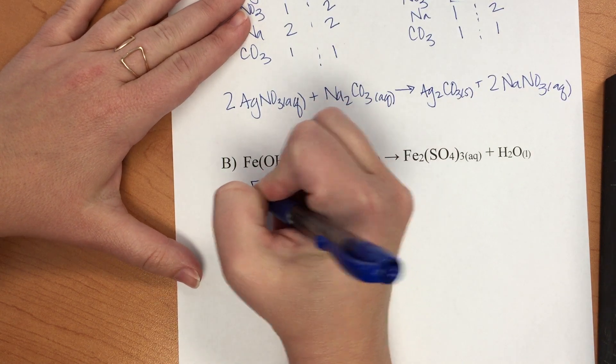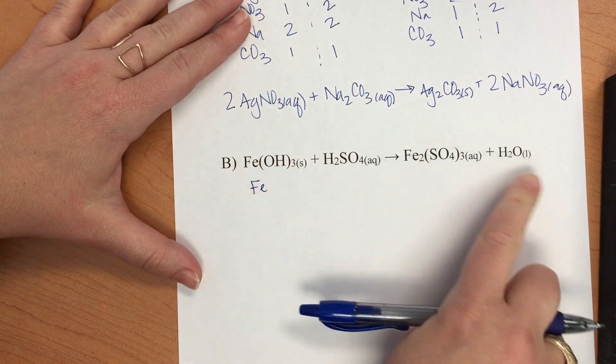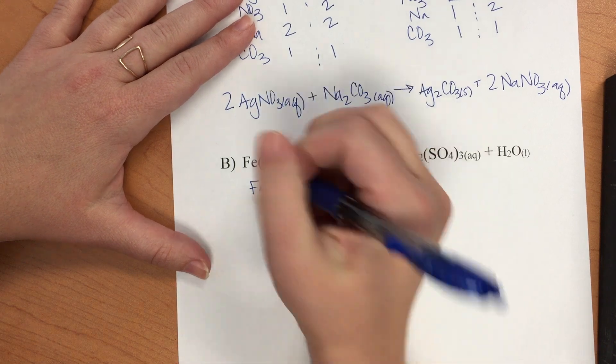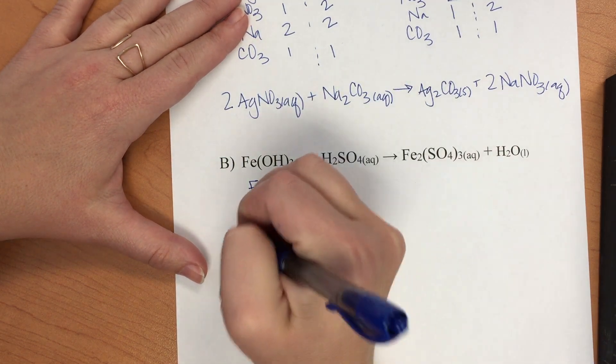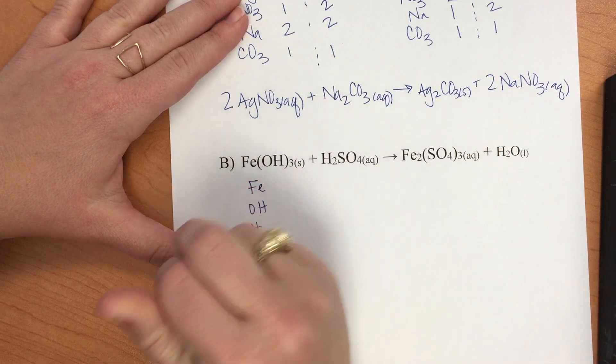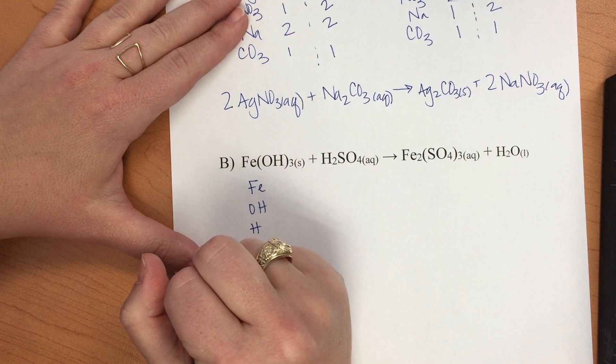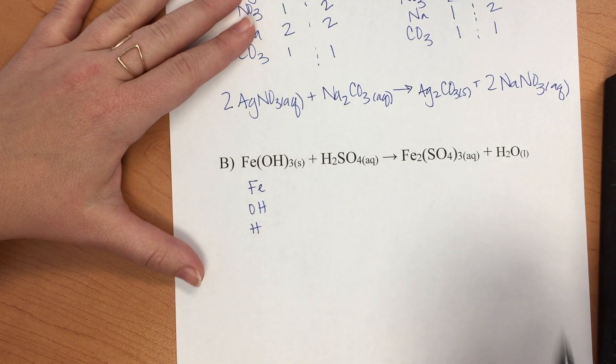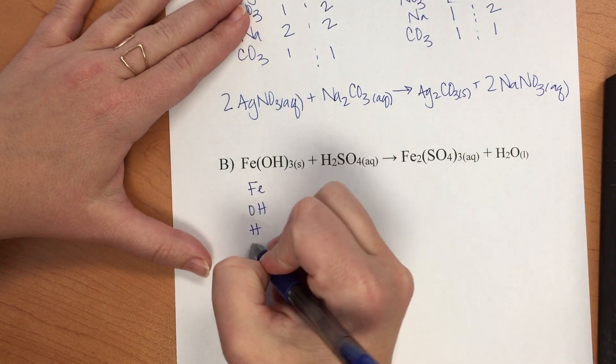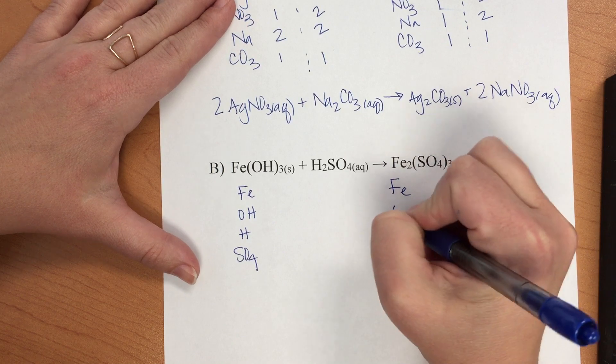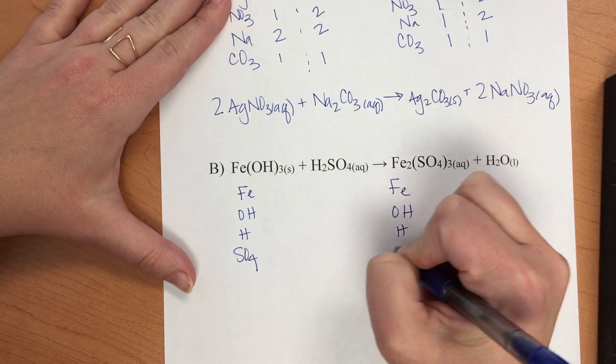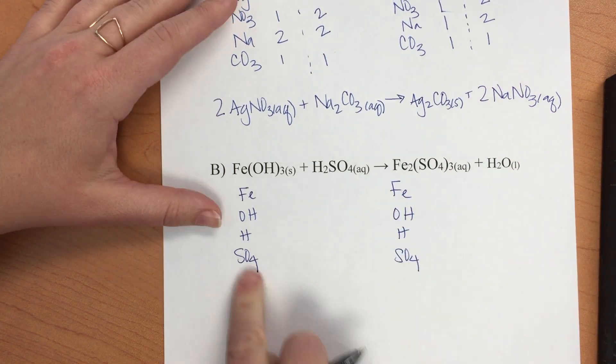We write out how many of these we observe. We have one iron, three hydroxides, two hydrogens, and one sulfate. Over here we have three sulfates, two irons, and one of each of these.